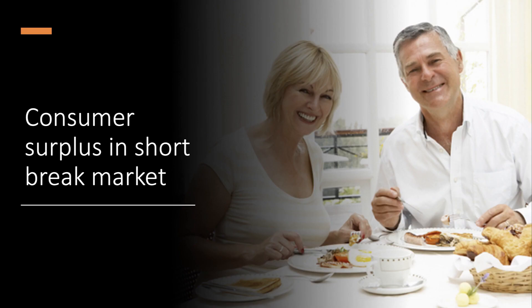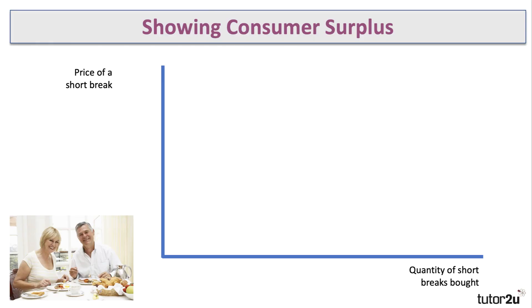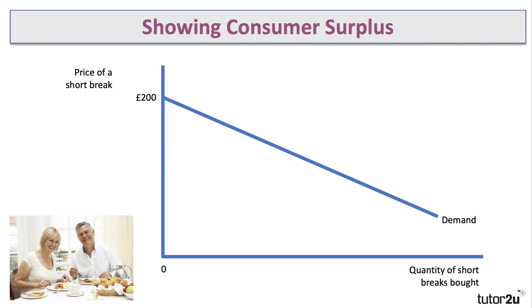Let's take a quick example: a hotel offering short weekend breaks. Here's the demand curve for the price of a short break. Where the demand curve cuts the y-axis, that's the maximum price people are willing and able to pay — around 200 pounds — but thereafter you have to cut the price to get more people into the market.